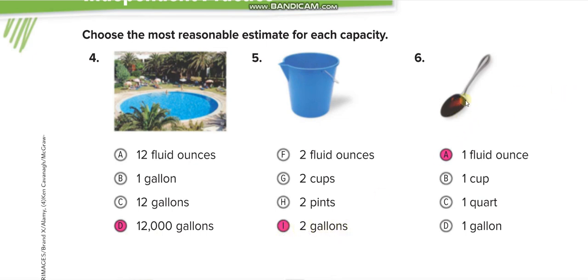This spoon—one fluid ounce will be more, but we are choosing the reasonable estimate. From these options, the reasonable one is one fluid ounce. One fluid ounce is more than this spoon, but from these options, that's the reasonable one.